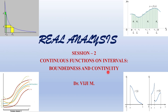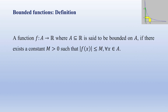In this class we will discuss the relation between continuous functions on intervals and boundedness of a function. The boundedness definition: a function f from A to ℝ, where A is a subset of ℝ, is said to be bounded if there exists a positive number m greater than 0 such that |f(x)| ≤ m for all x in the domain of f.